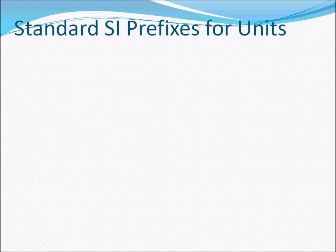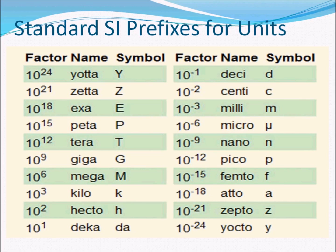The last thing to know is the standard prefixes used to describe physical quantities. For example, kilo is 10³, so a kilometer is 10³ meters. Nano is 10⁻⁹, so 4 nanoseconds means 4 × 10⁻⁹ seconds. Some prefixes like femto (10⁻¹⁵) and atto you may not have seen, since they apply to atomic-scale processes. Next time we will start dimensional analysis, which extends what we have learned today. I hope everything covered today has become clear. Thank you.